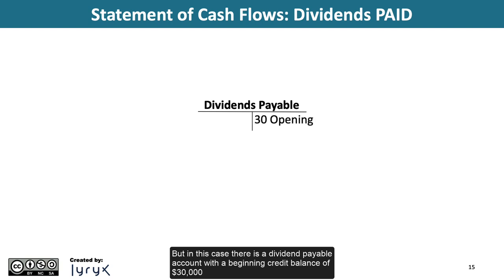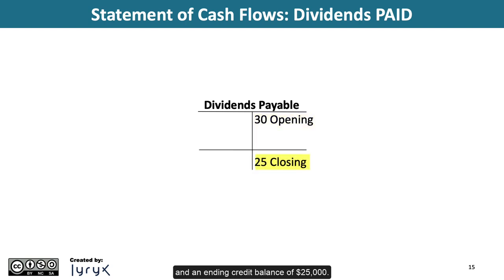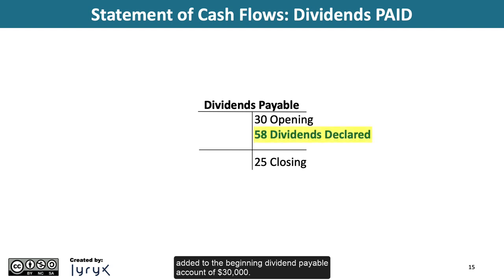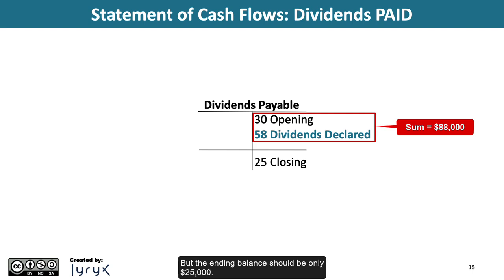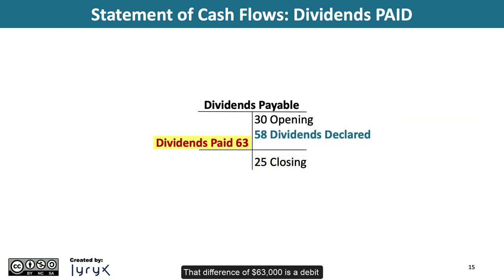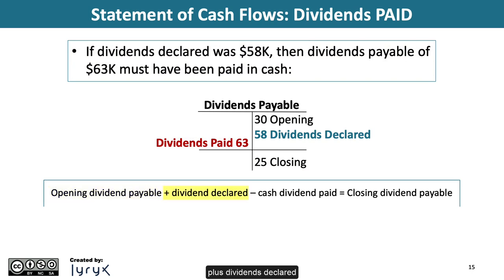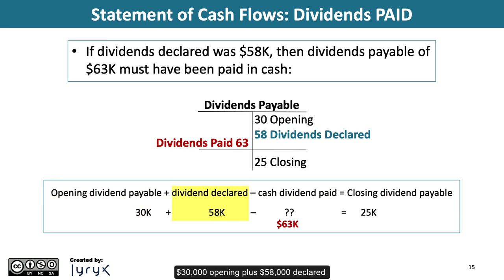In this case, there is a dividends payable account with a beginning credit balance of $30,000 and an ending credit balance of $25,000. The journal entry to record a dividend is to debit dividends declared (or retained earnings) and credit dividends payable. So the $58,000 dividends declared would be added to the beginning dividends payable of $30,000, giving a balance of $88,000. But the ending balance is only $25,000. The difference of $63,000 is a debit and must be the cash actually paid for dividends. Formula: opening dividends payable + dividends declared − cash dividends paid = closing dividends payable. $30,000 + $58,000 − $63,000 = $25,000.